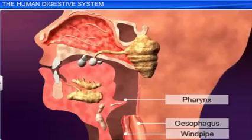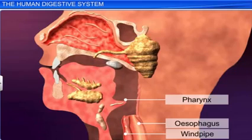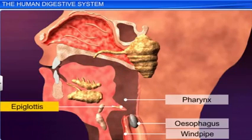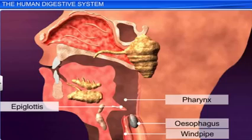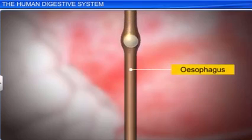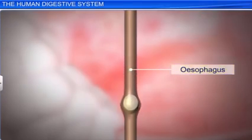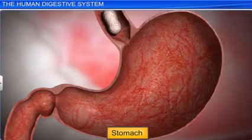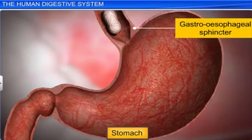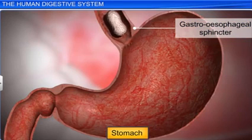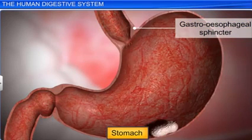When food moves through the pharynx and approaches the esophageal entrance, a flap of elastic cartilage tissue called the epiglottis reflexively closes, thereby preventing the food from entering the windpipe. The esophagus conducts the food from the pharynx to the stomach. At the end of the esophagus lies the gastroesophageal sphincter, a one-way valve that allows food to enter the stomach but prevents it from regurgitating.